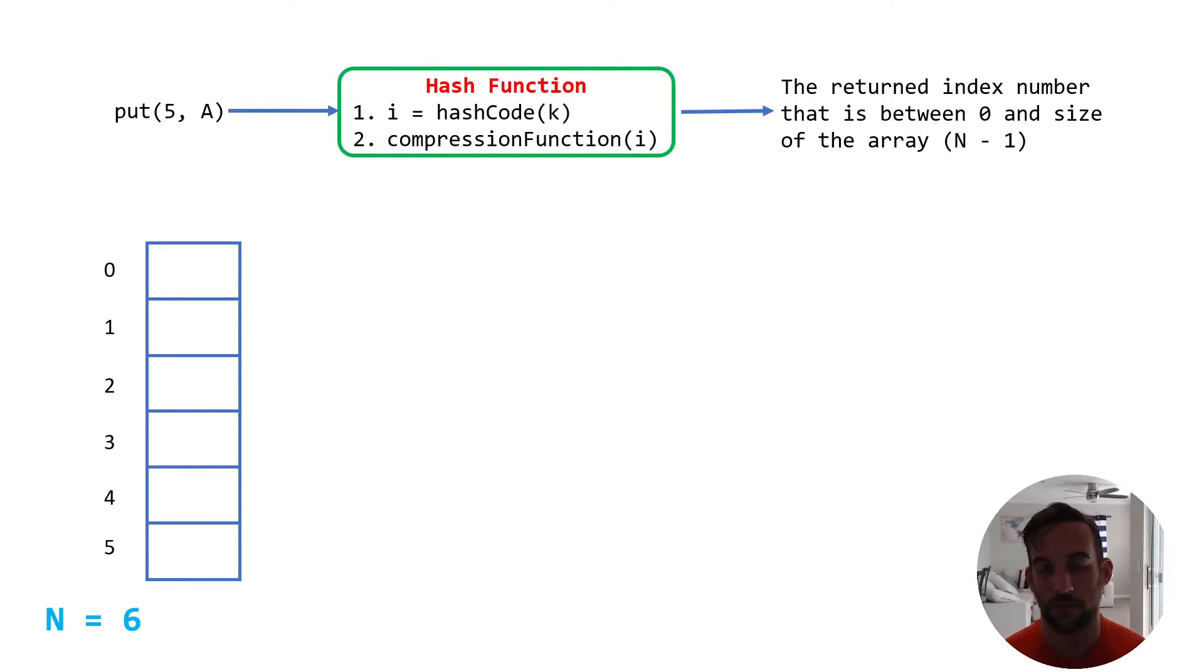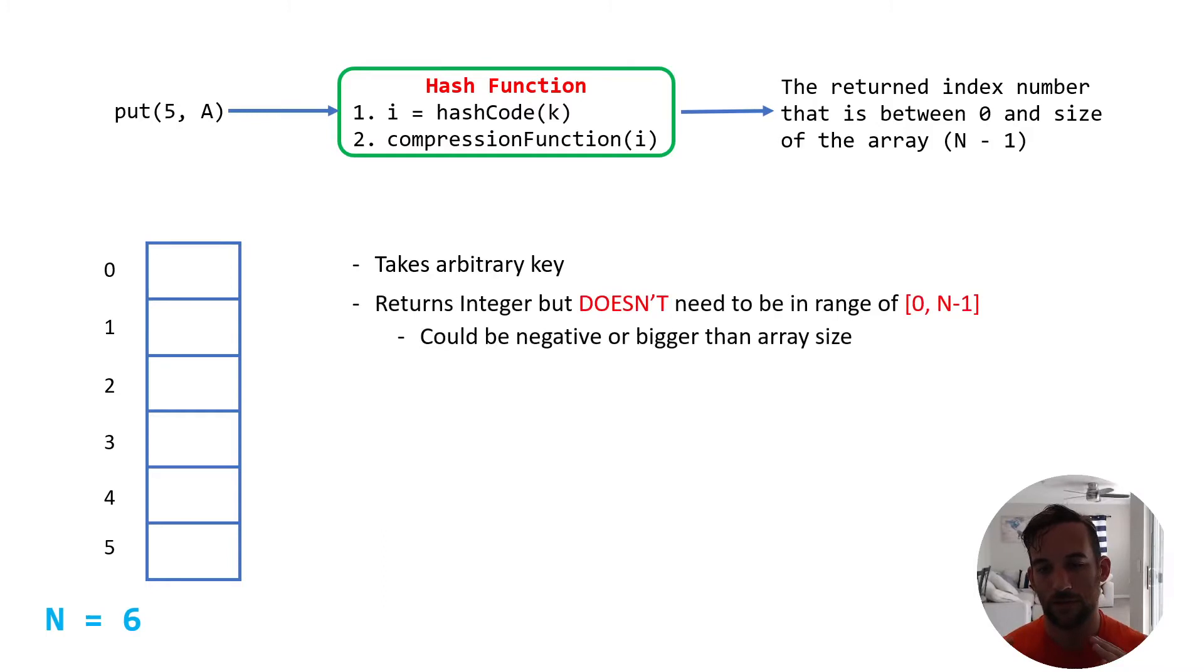I'm just using integer values, but again, it doesn't have to be an integer value. And so it takes in the key, whatever that key is, it turns it into an integer. And now we're going to say the variable i is equal to some integer that the hash code produced.